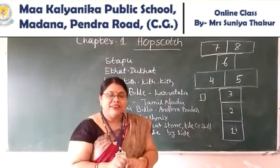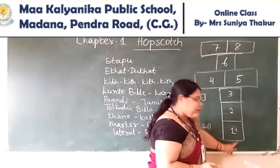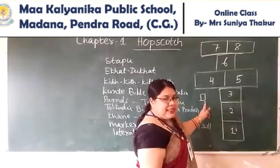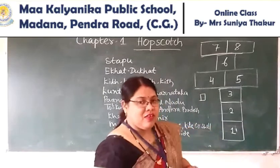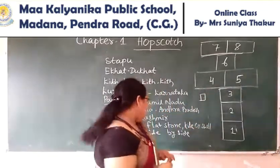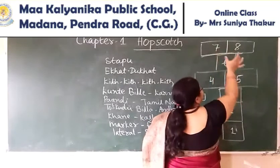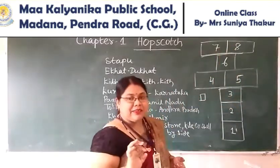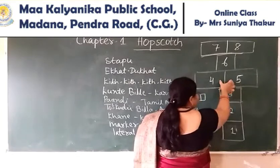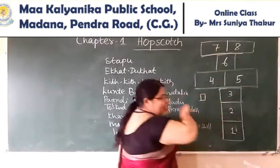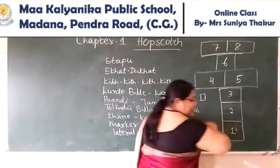Now I will tell the rules and regulations of this game. One person who is the player will stand behind square number 1 and throw the marker to the next square. Then he will hop one after another square — unless reaching the lateral part. Lateral means side by side. When he or she reaches near squares 7 and 8, on one foot he or she will hop to the lateral square, then turn and come back. That is the game.